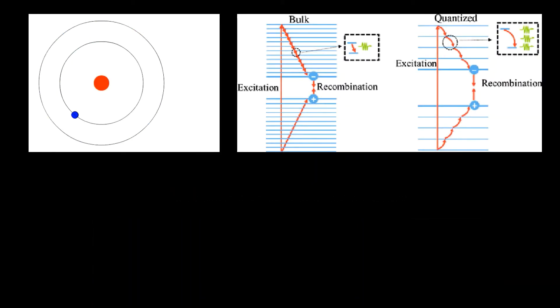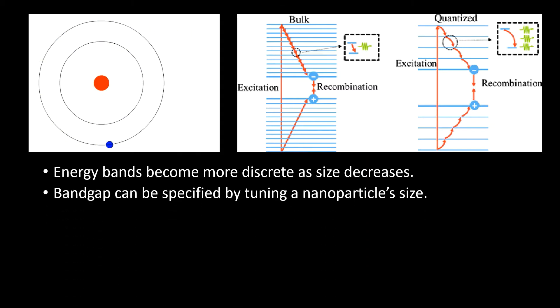Nanoparticles also become more quantized as they scale down. We all remember from chemistry class that electrons can jump around to various energy bands while gaining or losing energy. In bulk materials, many energy bands exist and energy levels become continuous. However, nanomaterials only have a limited number of energy bands with larger band gaps in between. Therefore, electrons absorb or emit a larger discrete amount of energy when excited, and we can change a nanoparticle size to very specifically alter the band gap between the valence band and the conduction band.